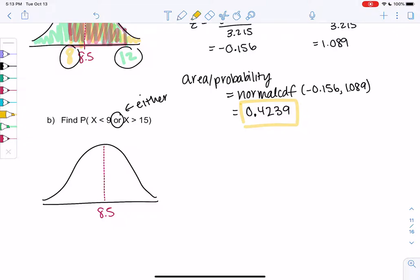So not necessarily the overlap. So less than 9. Less than is to the left. Or, so less than 9 or greater than 15. So 15 is probably somewhere over here, and greater than will be to the left.